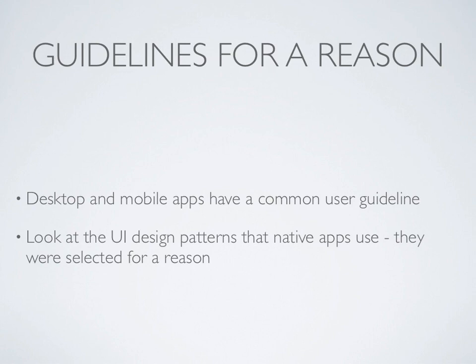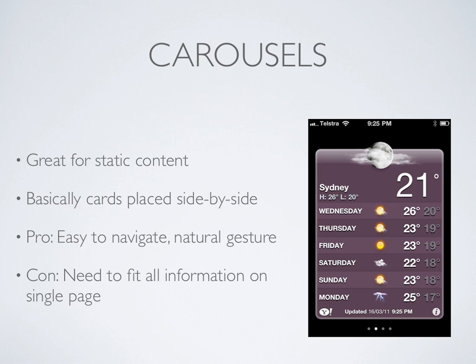The carousel is probably the simplest pattern. It's basically a set of cards that you can swipe between. It's a really natural action, and it's a great way to show related data that has no hierarchy. One of the problems with this pattern, though, is you need to be able to fit each piece of information in the set on a single card. Spanning information over multiple cards doesn't work particularly well.